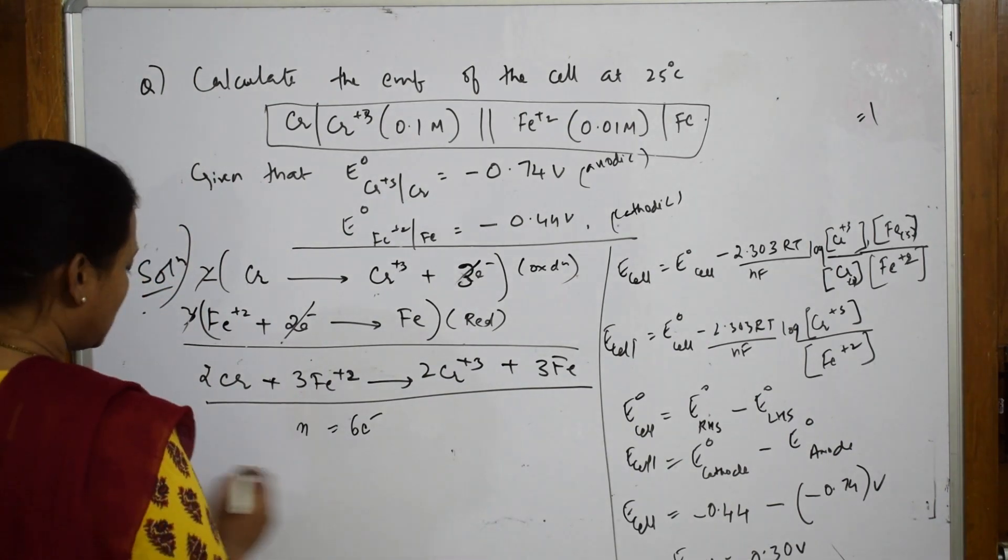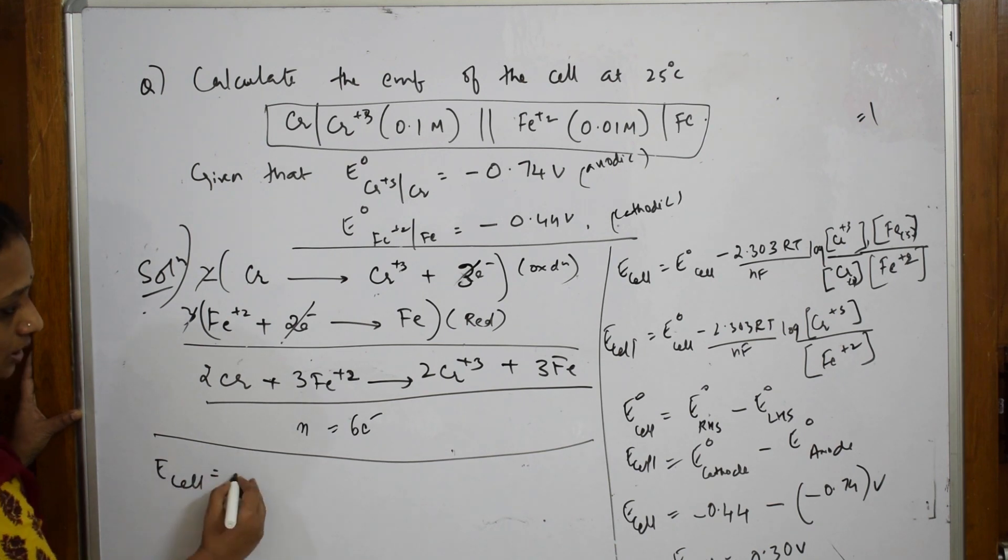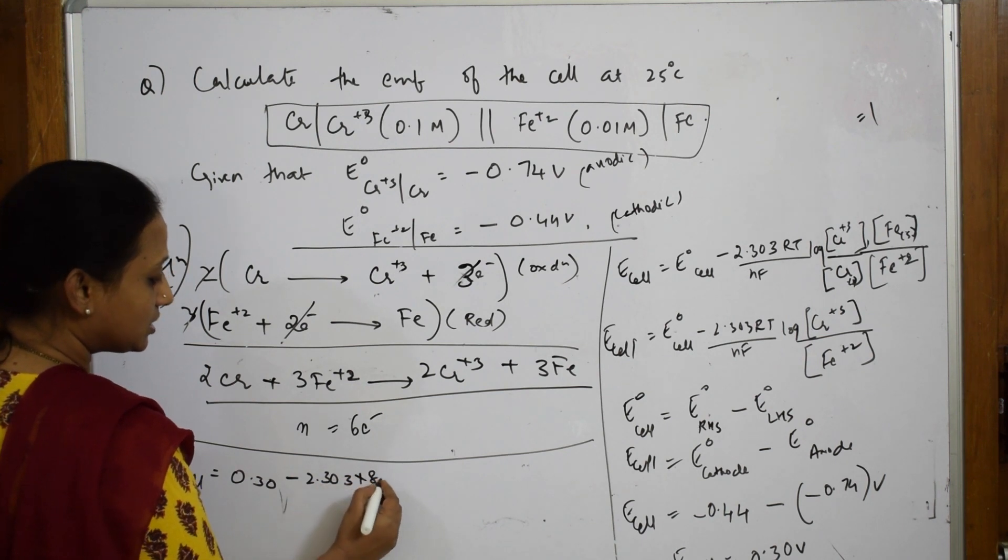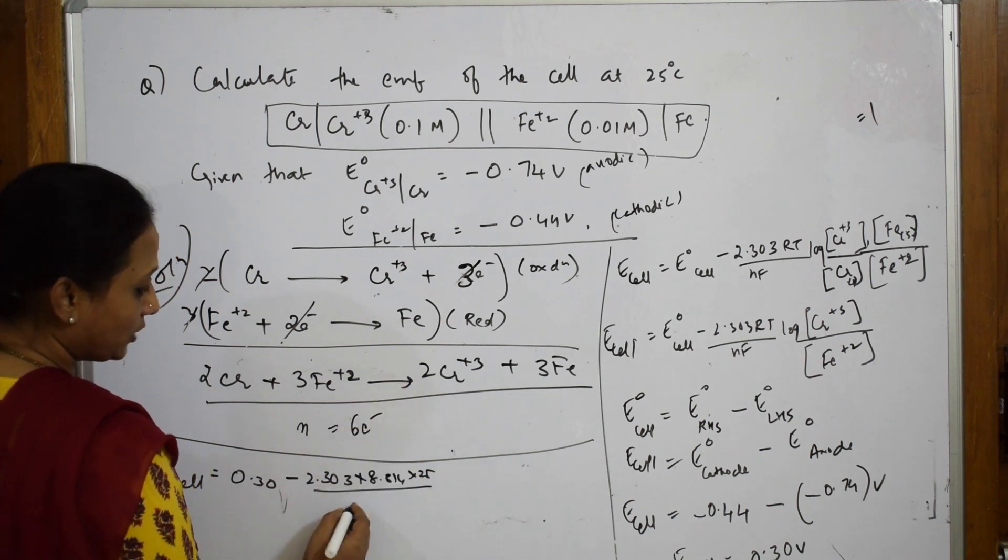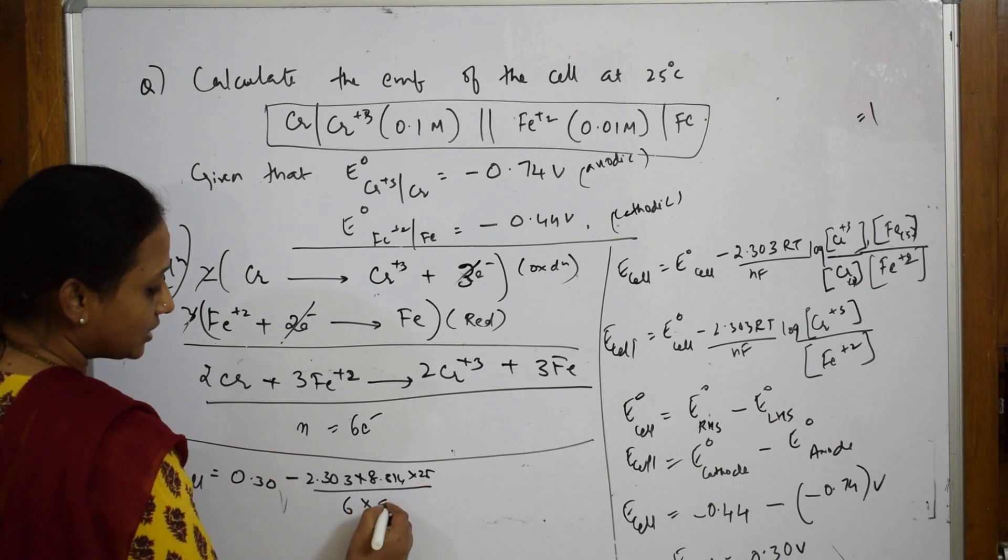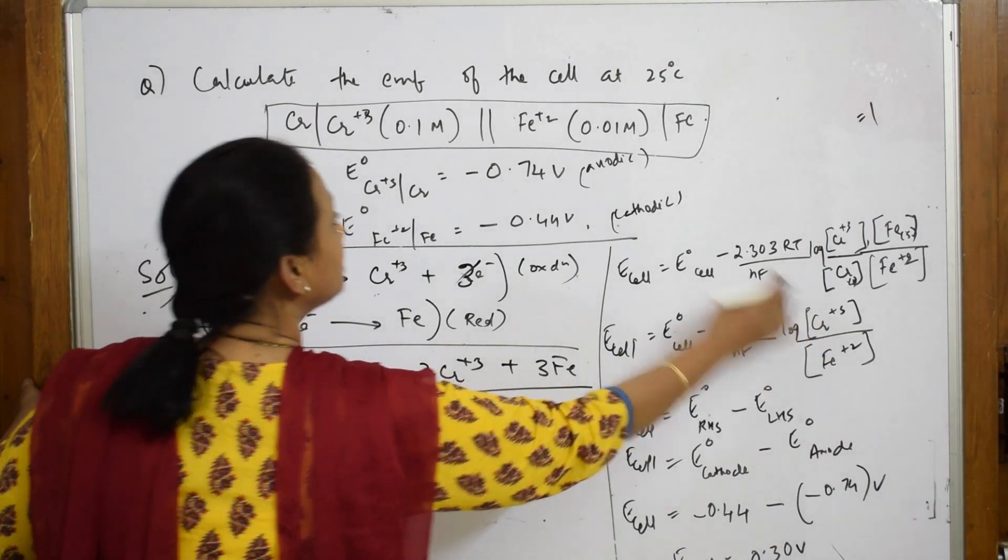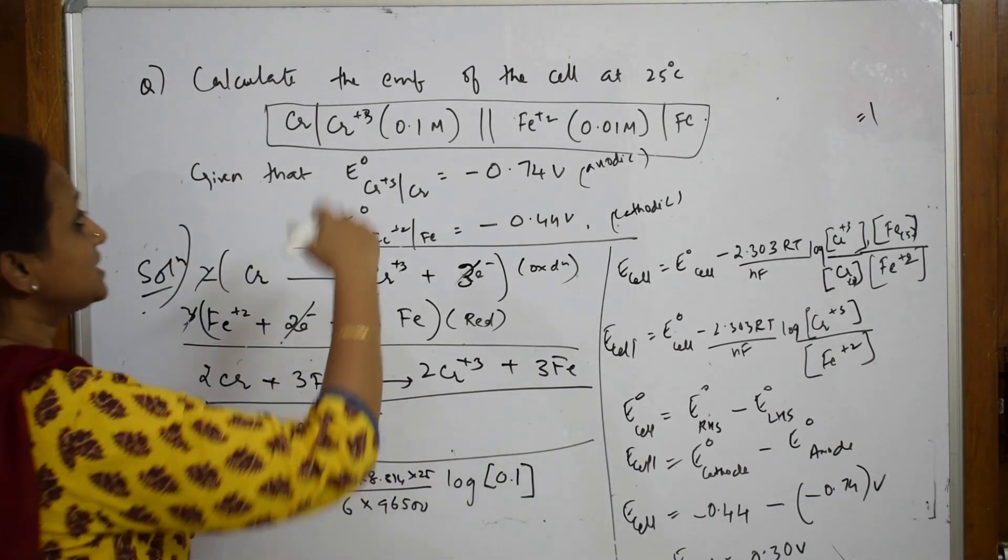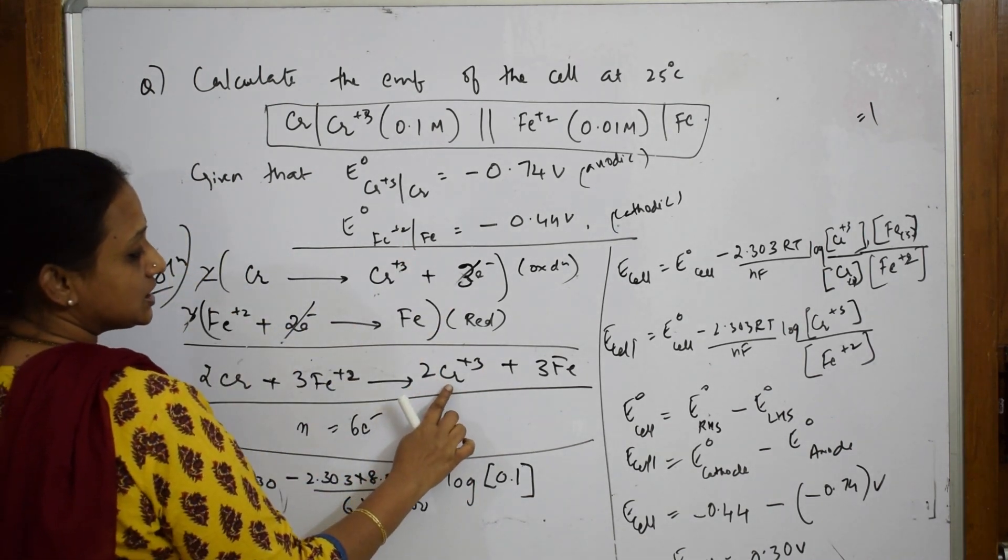Now substitute this value into the Nernst equation: E_cell = 0.30 - (2.303 × 8.314 × 298)/(6 × 96500) × log([Cr³⁺]²/[Fe²⁺]³). The chromium concentration is 0.1M raised to power 2, and iron is 0.01M raised to power 3.